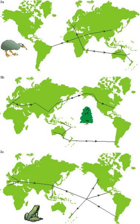A track is a representation of the spatial form of a species distribution and can give insights into the spatial processes that generated that distribution. Crossing of an ocean or sea basin or any other major tectonic structure, e.g. a fault zone, by an individual track constitutes a baseline.